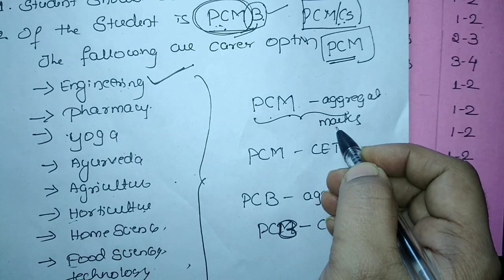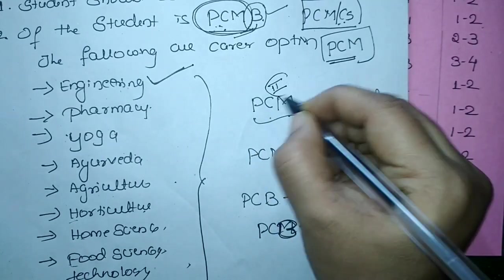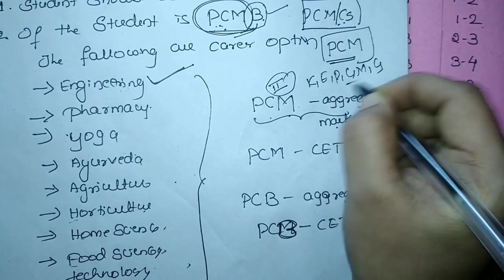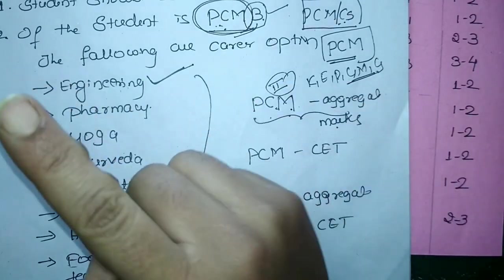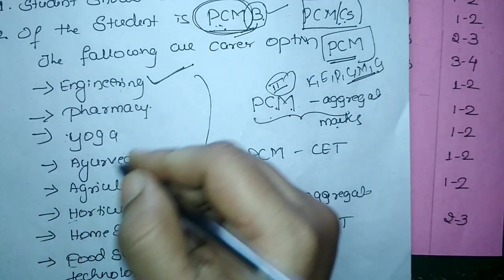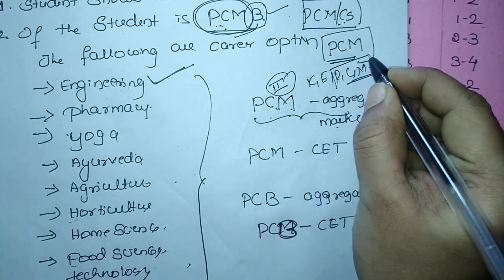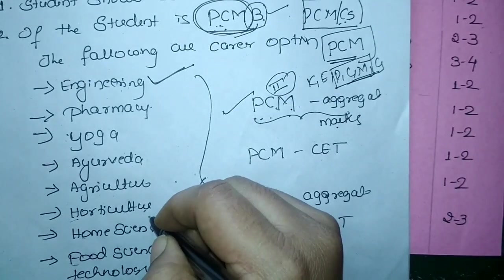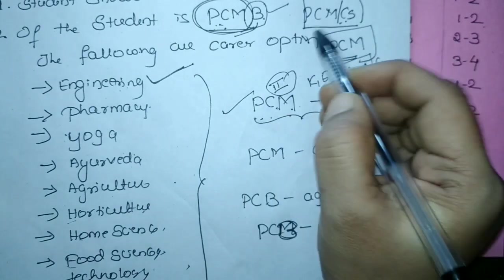So in second PU you are going to write Kannada, English, physics, chemistry, maths and CS. So for the PCM student who is writing Karnataka CET how ranking will be allotted I am explaining. So here the PCM marks of your second PU is taken into consideration and the CET exam that you are going to write that is physics, chemistry, maths.